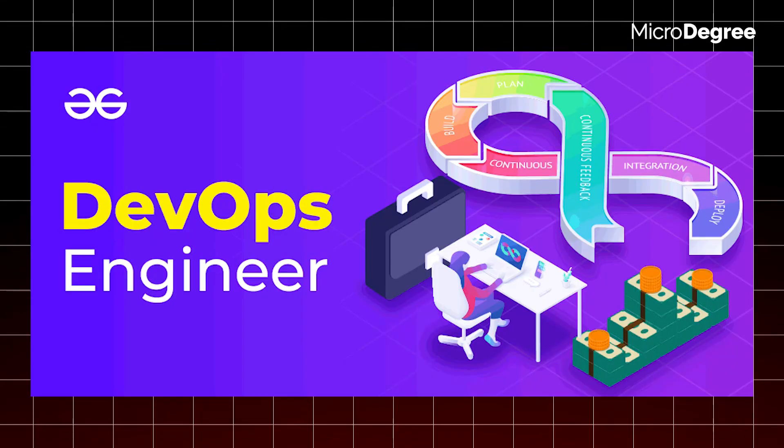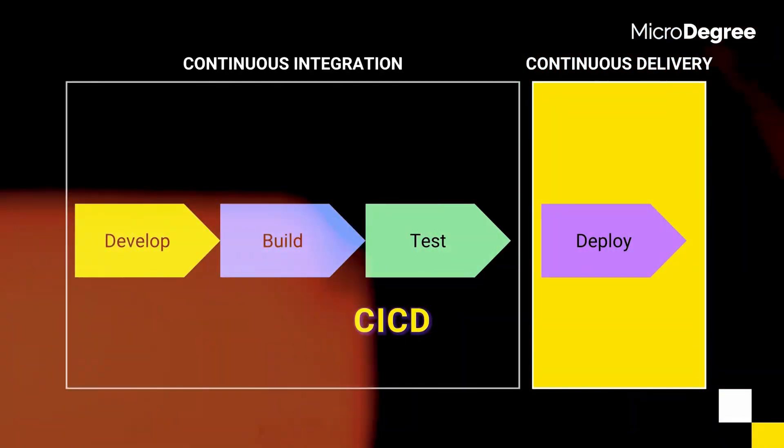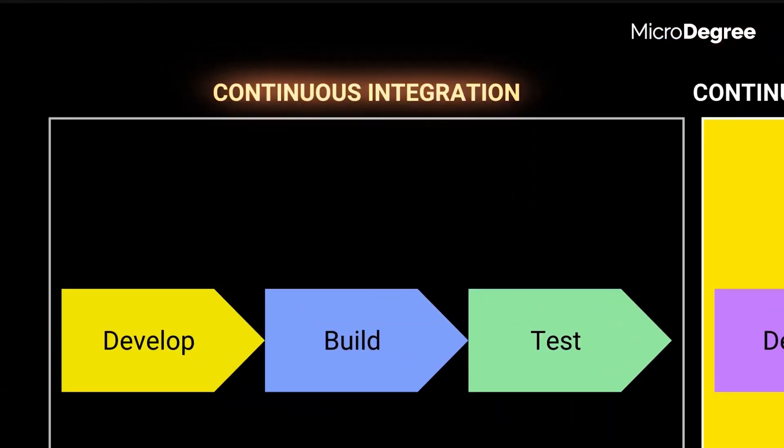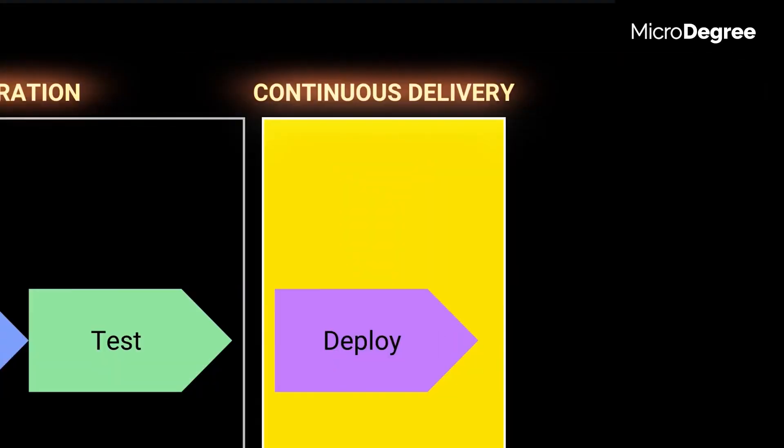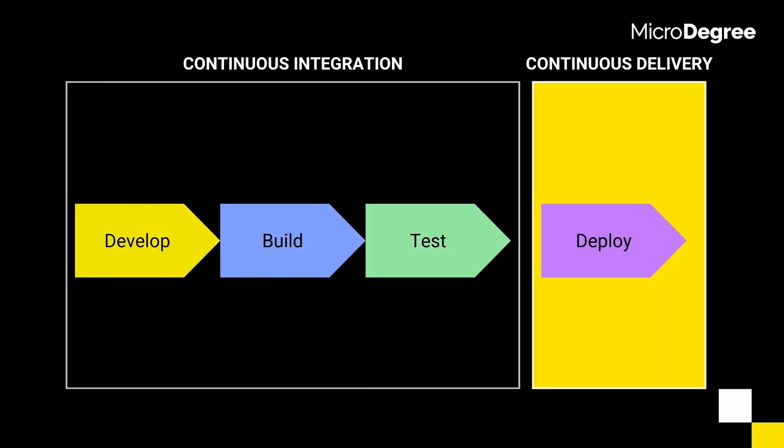First one: DevOps Engineer. This is a very common job role. What are your responsibilities? CICD Pipeline — Continuous Integration and Continuous Deployment.